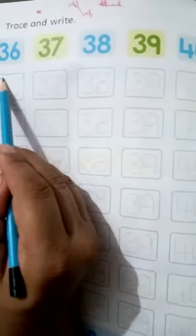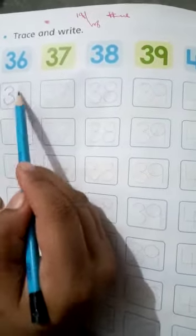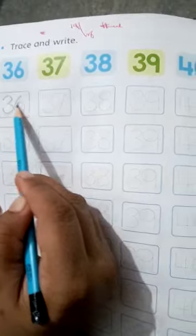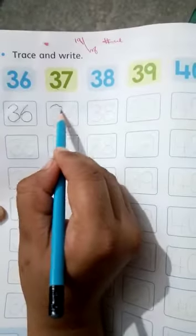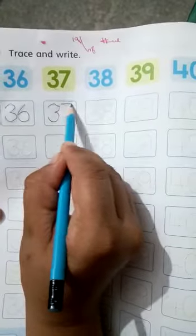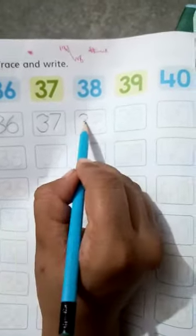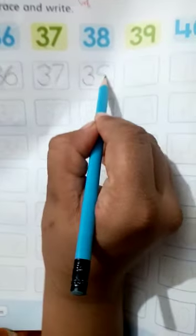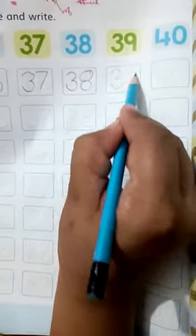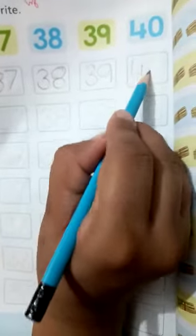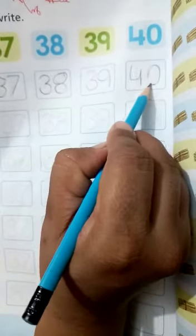Similarly, you have to join the dots. And 40. Join the dots and write on the last line in the same way. Students, do you understand?